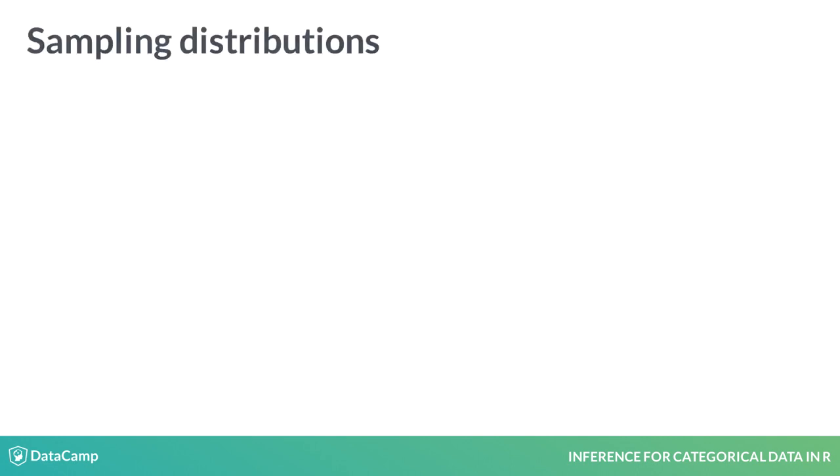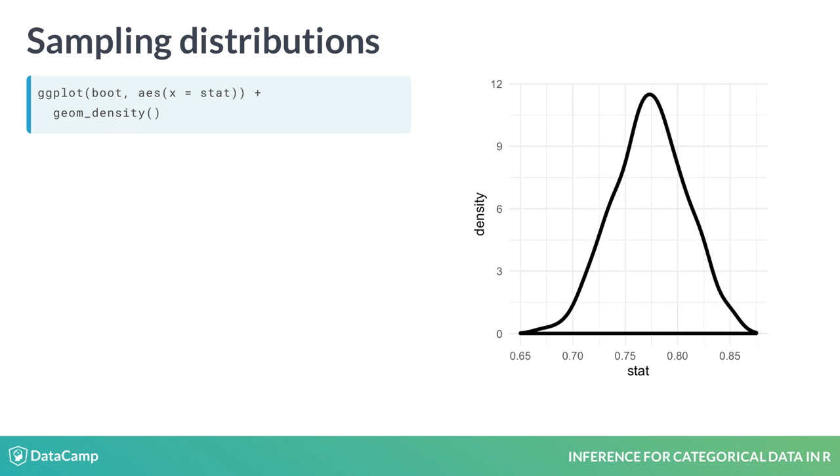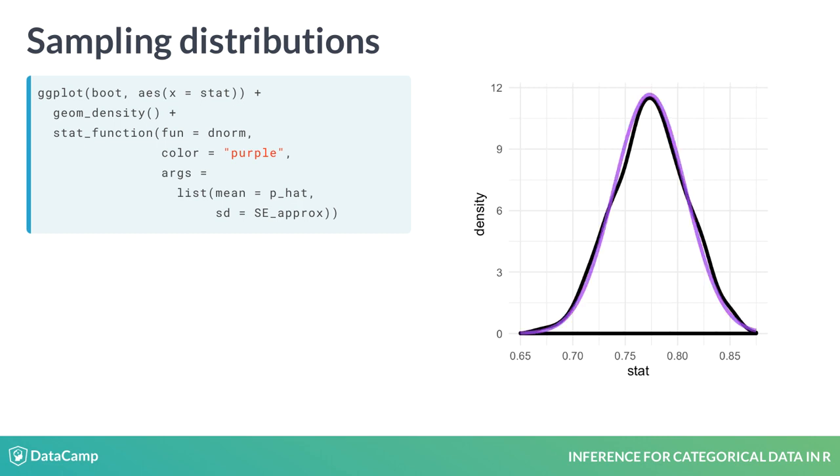Let's go a step farther and take a look at the shape of this bootstrap distribution. A density plot suggests that it's unimodal and symmetric. Let's add a layer to this plot that contains the normal curve that's centered at p-hat and uses the equation to find the standard deviation. And yes, let's make that curve purple.